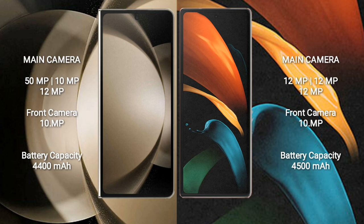12MP and front camera 10MP. Samsung Galaxy Z Fold 2 features a triple camera setup: 12MP plus 12MP plus 12MP and front camera 10MP. Samsung Galaxy Z Fold 5 has a 4400mAh battery with 25W fast charging support. Samsung Galaxy Z Fold 2 has a 4500mAh battery with 25W fast charging support.